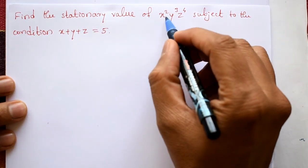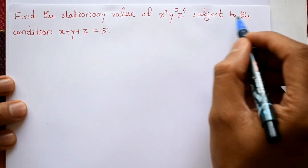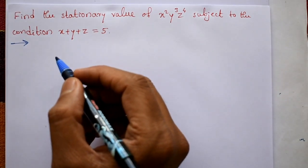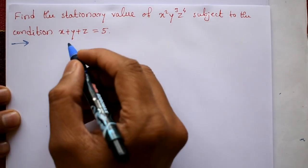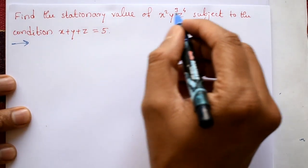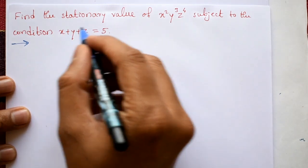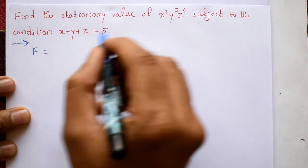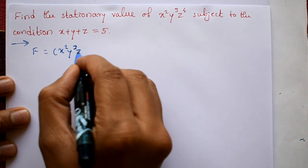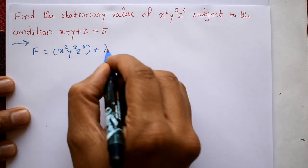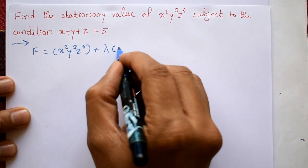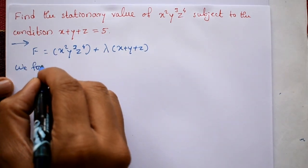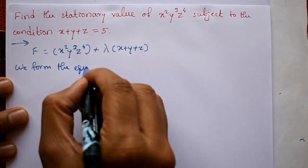Find the stationary value of x squared y cubed z raised to 4, subject to the condition x plus y plus z equal to 5. This is Lagrange's method. Taking u(x,y,z) = x²y³z⁴ and φ(x,y,z) = x+y+z = C, we form the function F equal to u(x,y,z) plus lambda into φ(x,y,z), that is x²y³z⁴ plus lambda into (x plus y plus z).